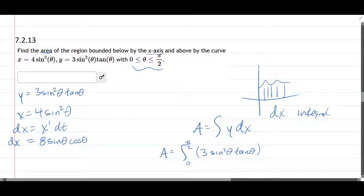Now, what is dx? It's 8 sine theta cos theta. And I left out... I wrote dt, but I meant d theta.